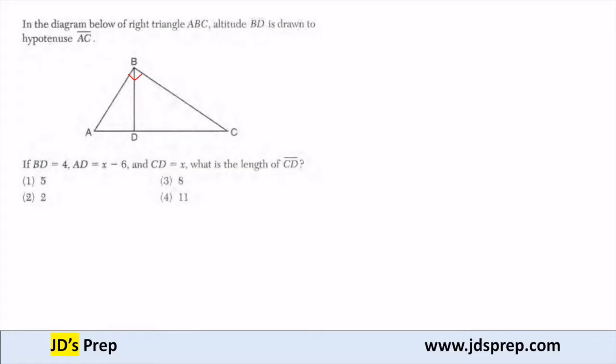Altitude BD is drawn to hypotenuse AC. So let's also draw in that right angle as well. The important thing is that BD is an altitude. So because BD is an altitude drawn to the hypotenuse, we can use the geometric mean or altitude theorem.